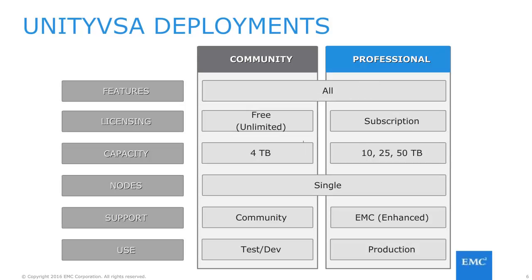For deployment options, there are different capacity points available with associated support models. First, there is the free edition of Unity VSA that can be downloaded from EMC.com and is limited to 4TB of capacity. This free edition is only community-supported, meaning all issues can be posted to the EMC community forum for help in troubleshooting, but not associated with EMC service requests.